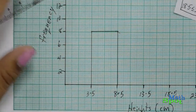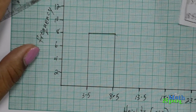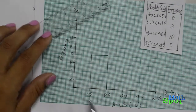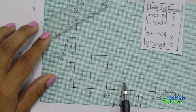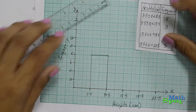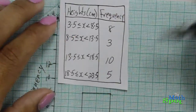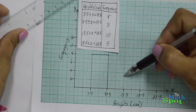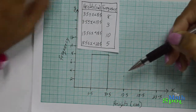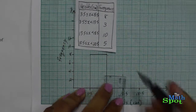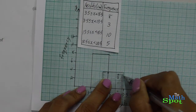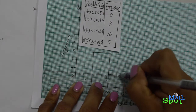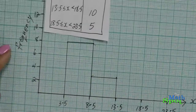From there, we continue to draw our histogram. The second bar has a frequency of 3. Locate 3 on your y-axis. That means our second bar, from 8.5 to 13.5, will go as high as 3. Make sure you have your rulers handy.